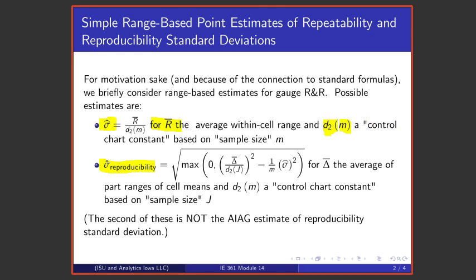And so we're going to use little d2 based on a sample size of little m because that's what every individual range is and we're averaging those. So we're going to use R-bar over a little d2 based on the within cell sample size.